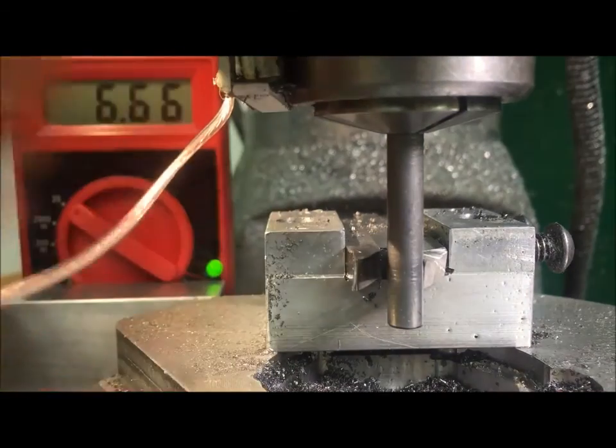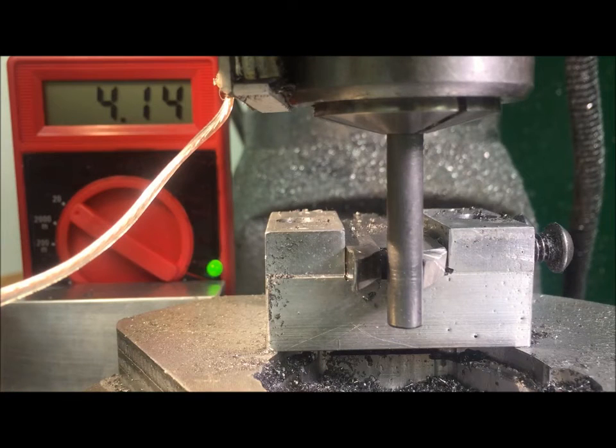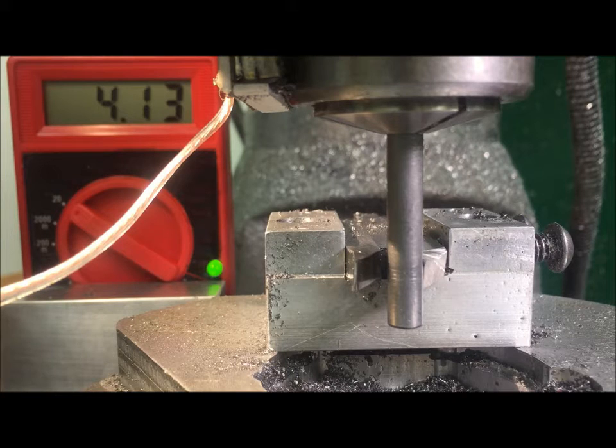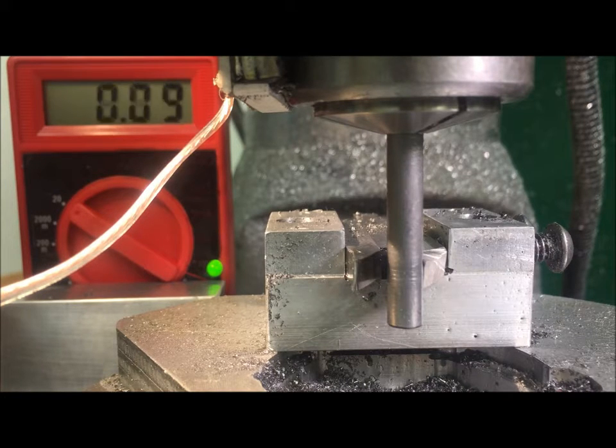I've got the ability to jog the spindle left and right. So right now it's a thou away, and you can see that the meter is reading 4.13. The actual value isn't important—what's important is how it contrasts to the minimum reading, which you'll see in a moment. So now I'm going to jog to the right a thou, and you see there's quite a large change. So 0.05 is touchdown.